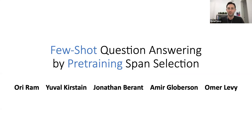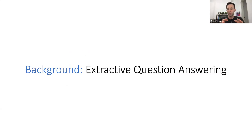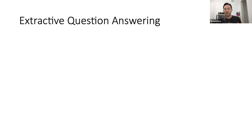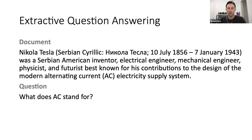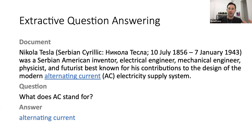In this work, we're going to focus on extractive question-answering. In this task, we're basically given a document and a question about it, and the answer is some kind of span of words — basically an n-gram in the given document. A famous example from the SQUAD dataset from Stanford: given the Wikipedia page of Nikola Tesla, the question 'what does AC stand for' can be answered with the span 'alternating current'. You can imagine all sorts of other questions, such as 'when was Nikola Tesla born'.